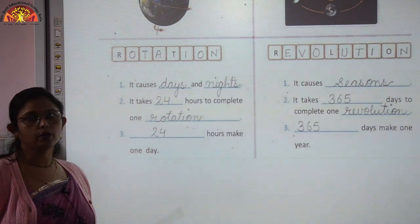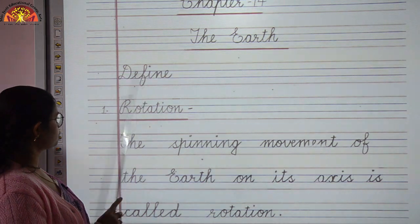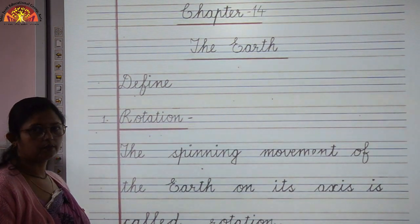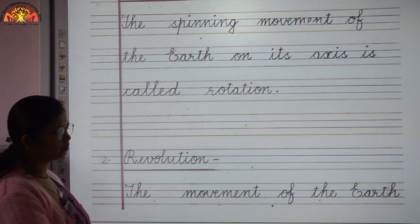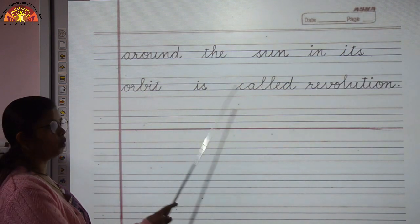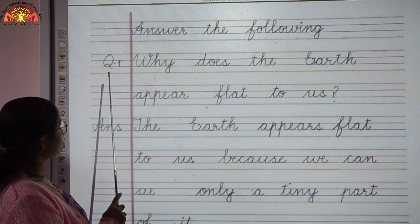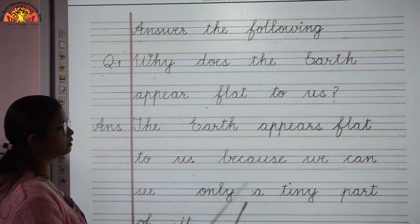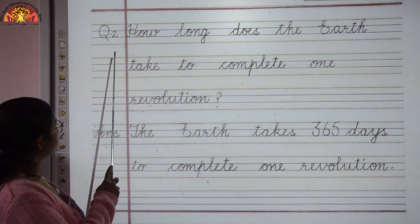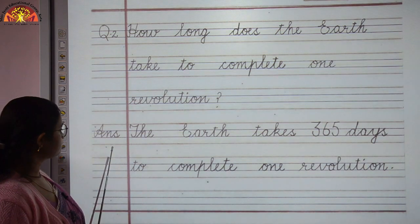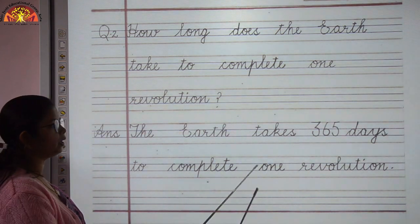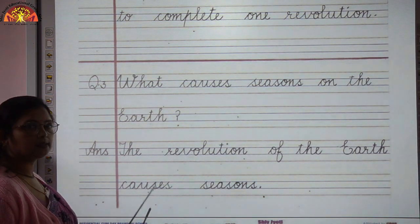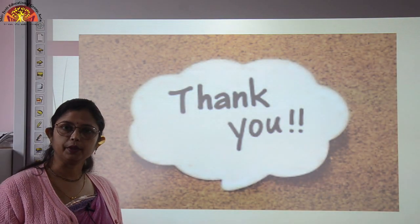Now we revise the copy work for chapter 14. Definitions: Rotation — the spinning movement of the Earth on its axis is called rotation. Revolution — the movement of the Earth around the sun in its orbit is called revolution. Questions: Why does the Earth appear flat to us? Because we can see only a tiny part of it. How long does the Earth take to complete one revolution? 365 days. What causes seasons on the Earth? The revolution of the Earth causes seasons.